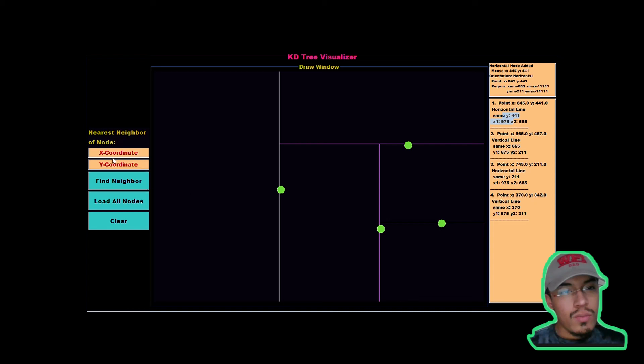Another cool feature that this visualizer lets you do is put an X coordinate like 200 and a Y coordinate like 500, and it lets you find the nearest neighbor. This is the point that we input it, and this is the nearest neighbor as follows.